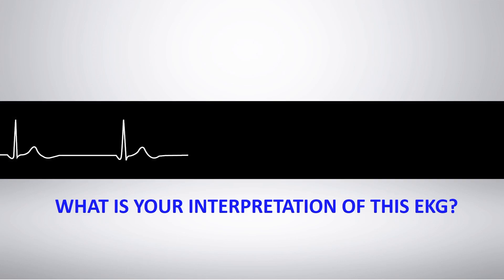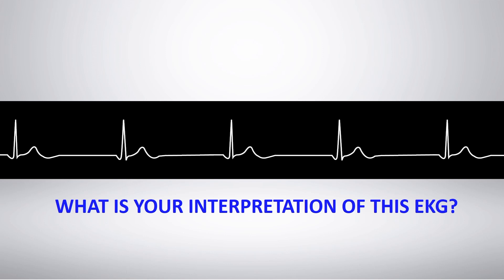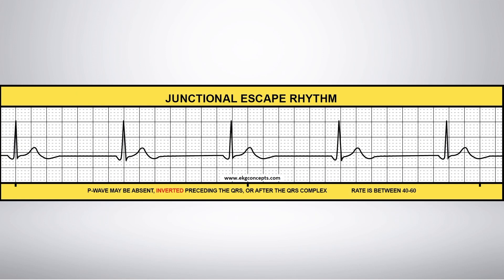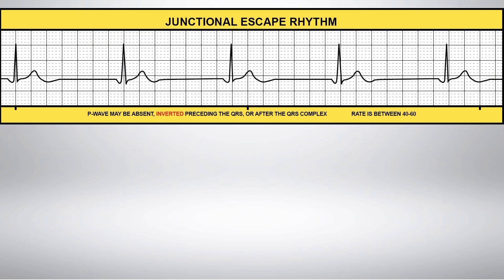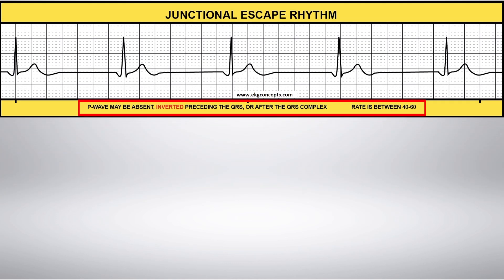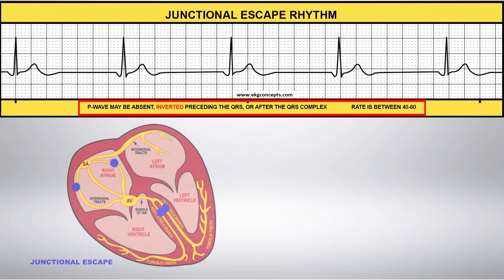What is your interpretation of this EKG rhythm strip? Junctional Escape Rhythm originates when the AV node or the tissue surrounding it takes over as the primary pacemaker. The heart rate is between 40 to 60 beats per minute.